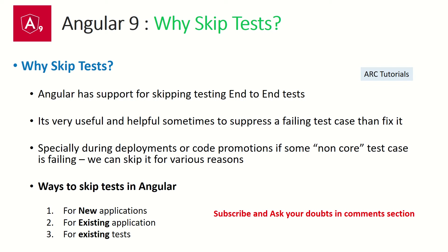This is helpful sometimes by suppressing failing test cases. For example, when you are deploying or doing a code promotion to environments other than development, you may need to skip some failing test cases. When deploying from development to staging, production, or QA environment and some test cases are failing, you might want to skip them rather than fix them immediately because it may be time consuming. That's when you can skip the test and still proceed with your deployment. There are three ways to skip Angular test cases.